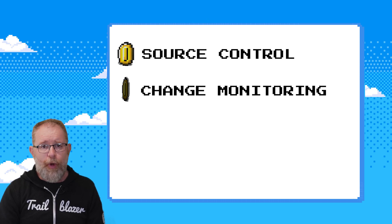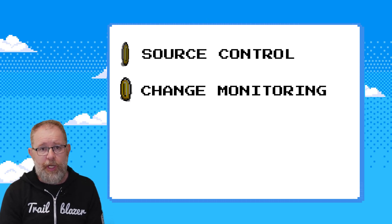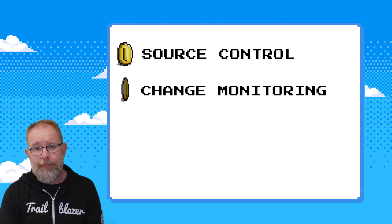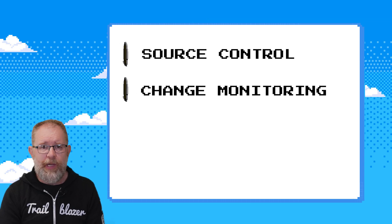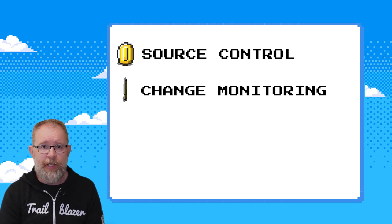Number two is monitoring for unauthorised changes. Even with the best intentions, people make manual changes, often directly in production. So implement metadata monitoring tools that capture real-time snapshots of your environments. These tools can alert you when a change happens outside your pipeline, and this gives you visibility into the who, what, when, and where of every change — intentional or not.